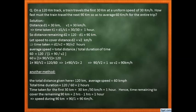Let's calmly go through the next question step by step. On a 120 km track, a train travels. Think of it as a rail track that is 120 km long. The train starts from one end, and for the first 30 km it moves with a uniform speed of 30 km per hour — so it covers those 30 km in one hour.